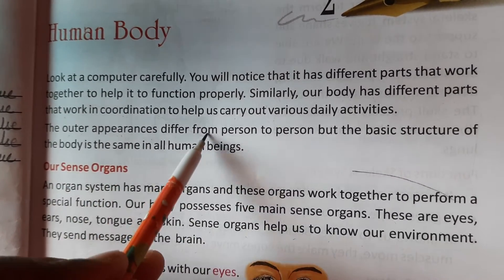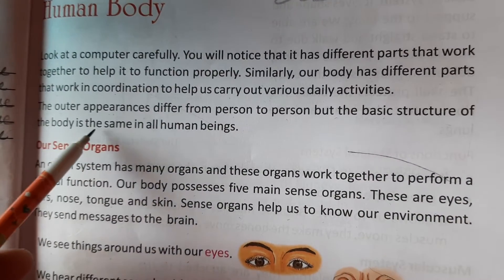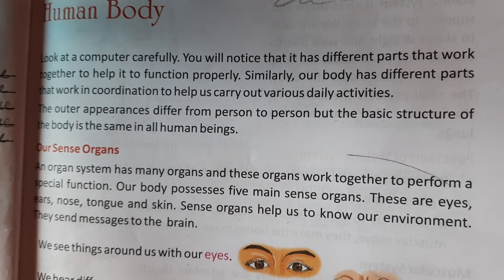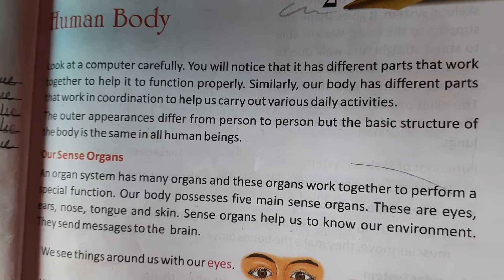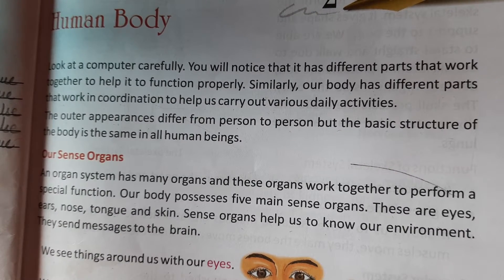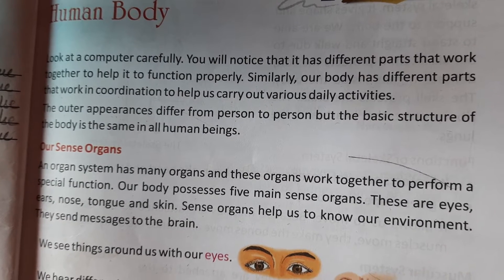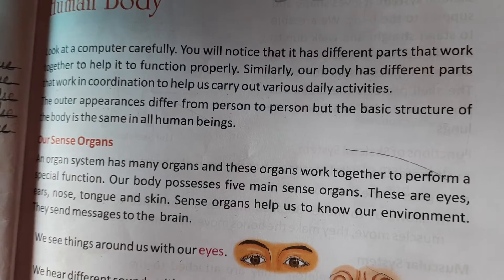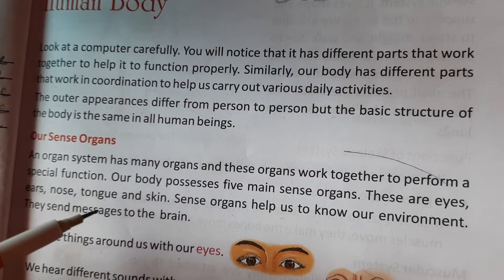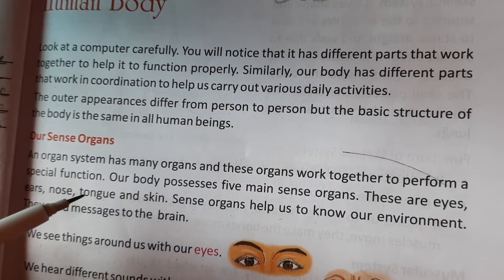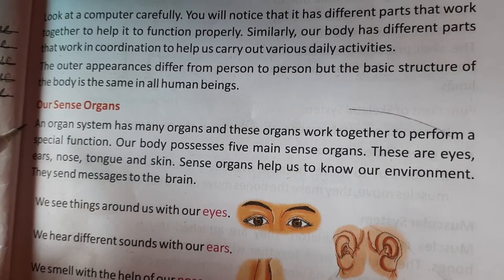The outer appearance differs from person to person, but the basic structure of the body is the same in all human beings. The external appearance of any person can be different from one another — person to person, human to human — but the inside body structure is the same, so that the body can function.